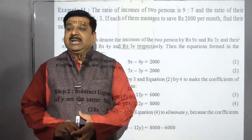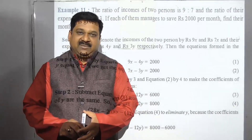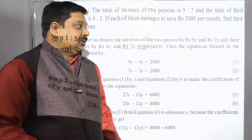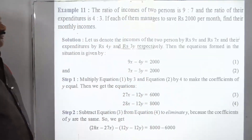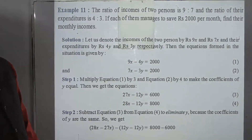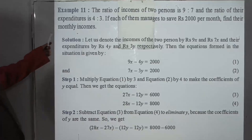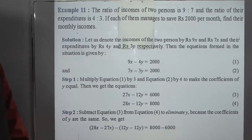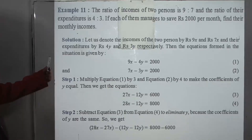Let's start with example number 11, which is based on the elimination method. The ratio of incomes of two persons is 9 to 7 and the ratio of their expenditures is 4 to 3. If each of them manages to save rupees 2000 per month, find their monthly income. This is an important question asked in examinations.